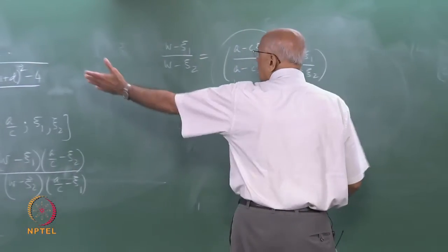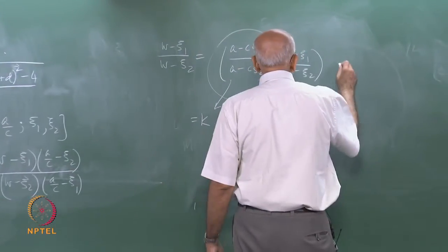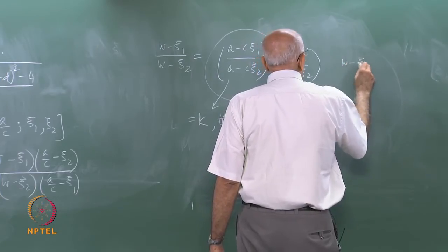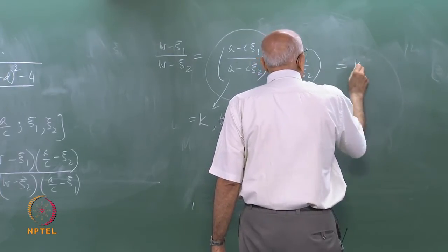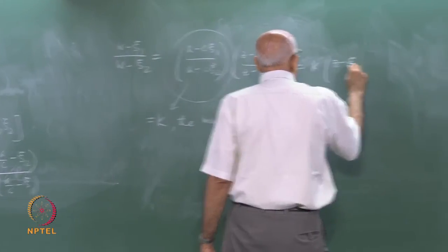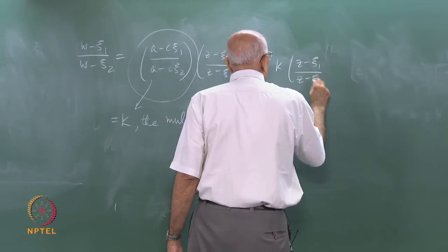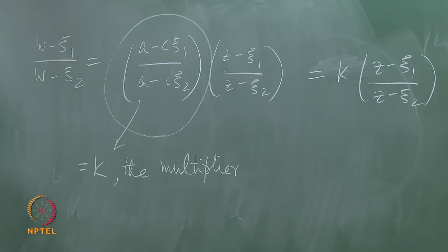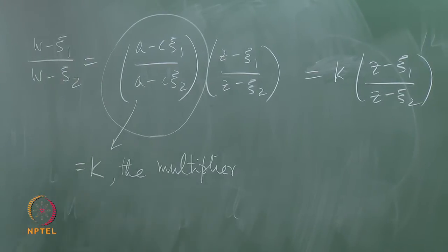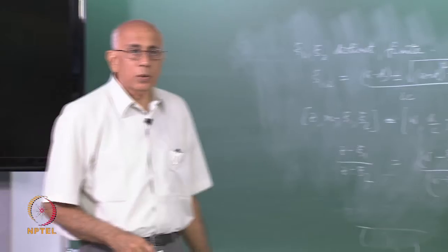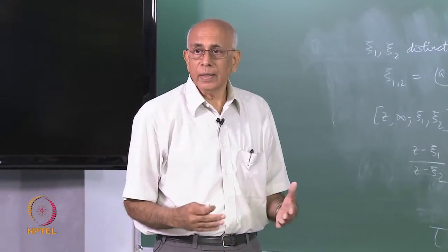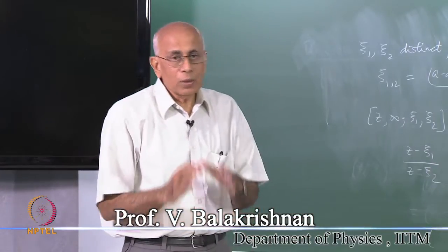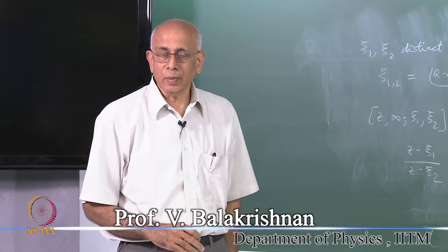Our general statement is that when you have two distinct fixed points, the transformation is of the form w minus i1 equals k times (z minus i1) over (z minus i2). That is a much more natural way of writing this Möbius transformation, because it says take this ratio and multiply it by a certain number k.